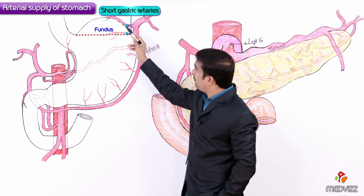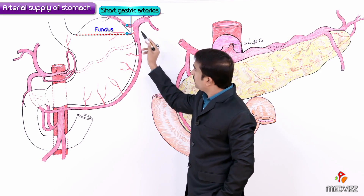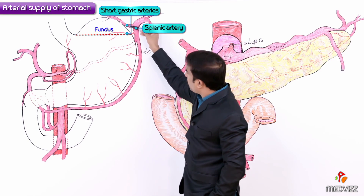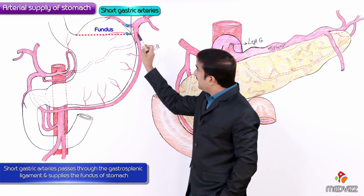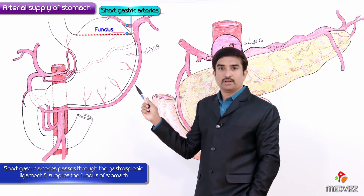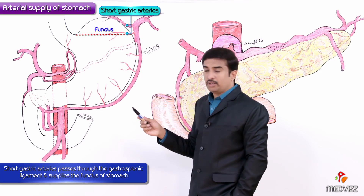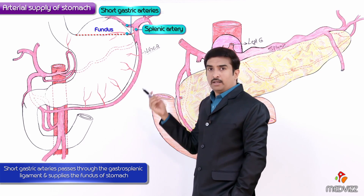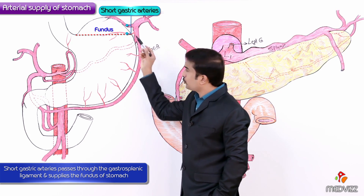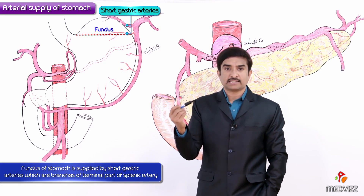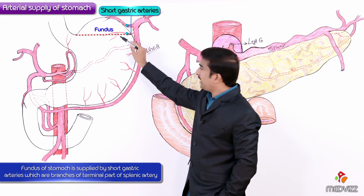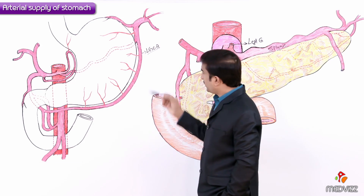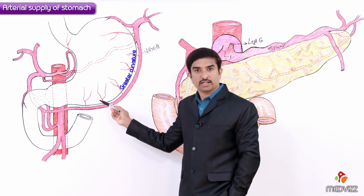The fundus of the stomach is supplied by the short gastric arteries, which are the direct branches of the terminal part of the splenic artery. There is a ligament between the fundus of the stomach and the spleen called the gastrosplenic ligament. These short gastric arteries pass through this gastrosplenic ligament and supply the fundus of the stomach.